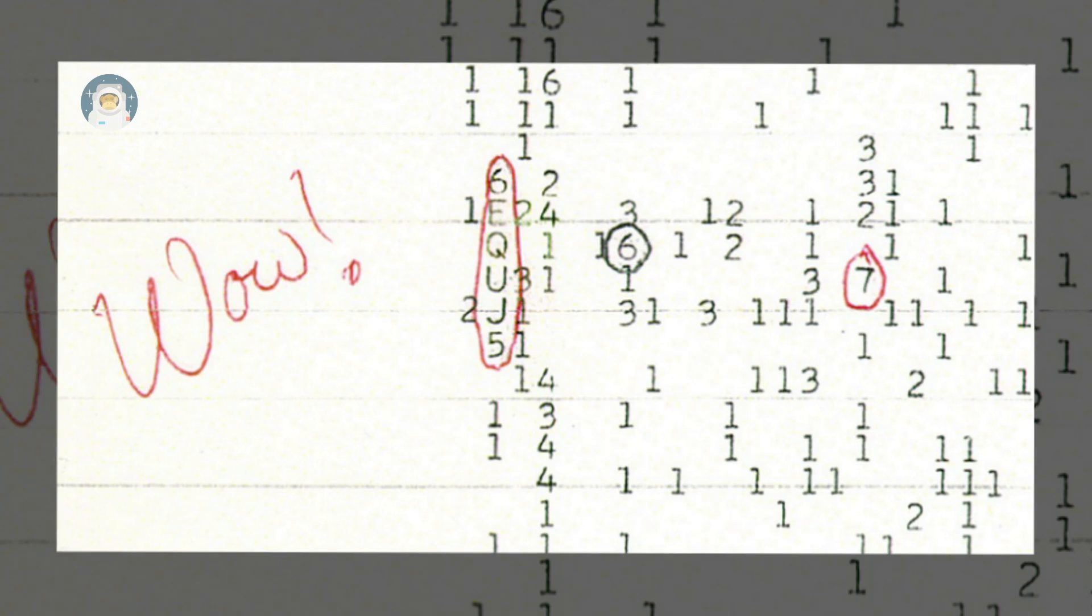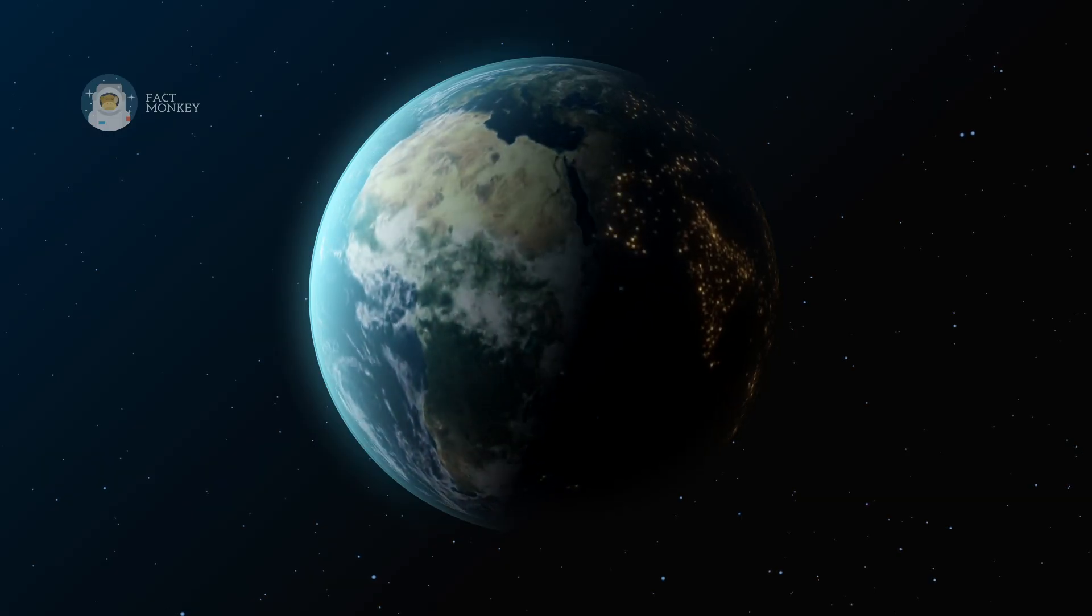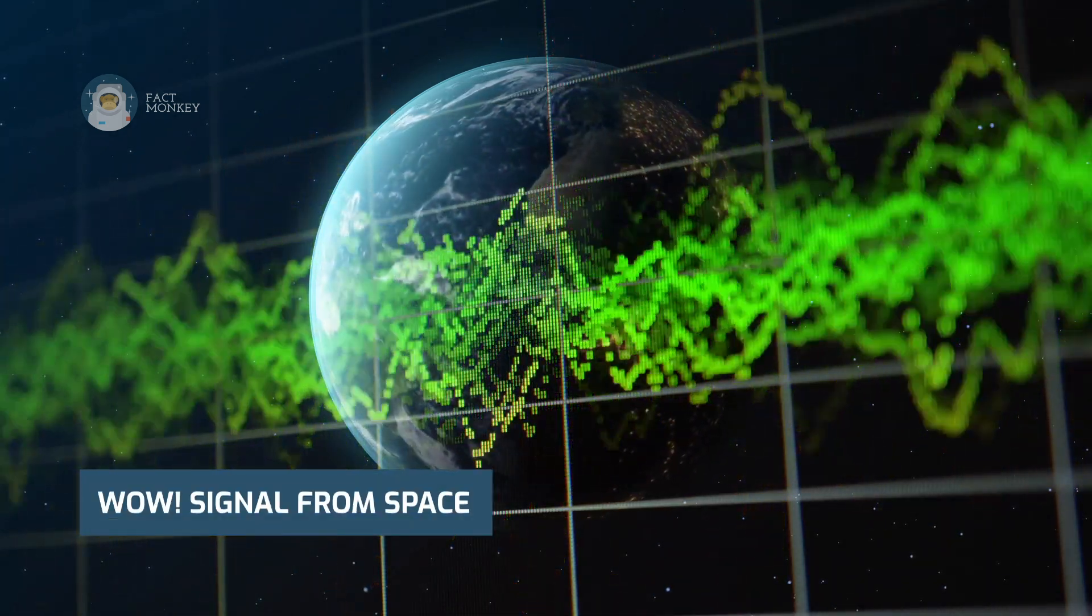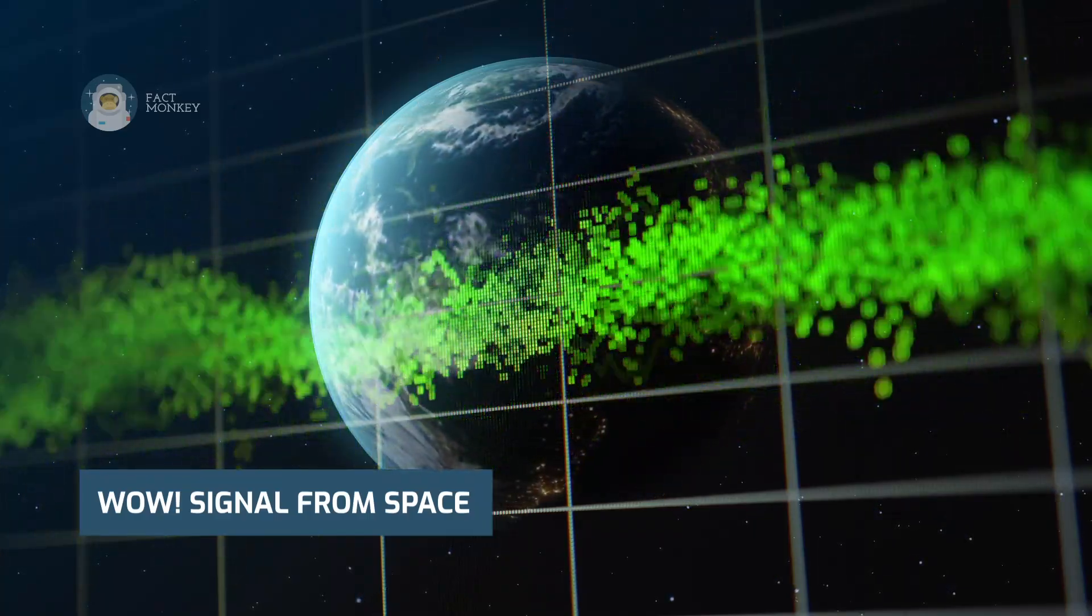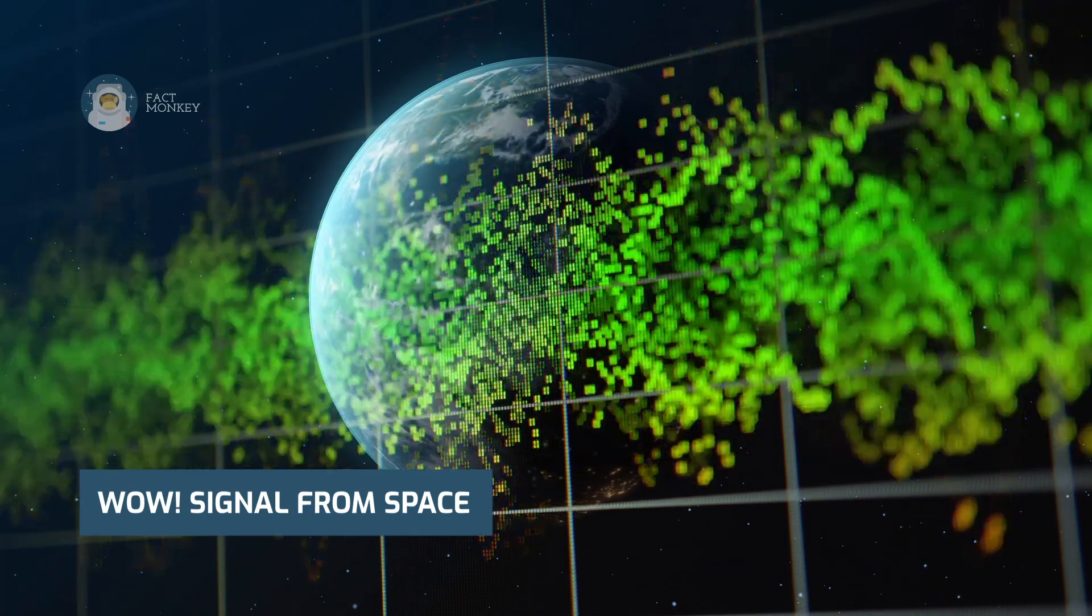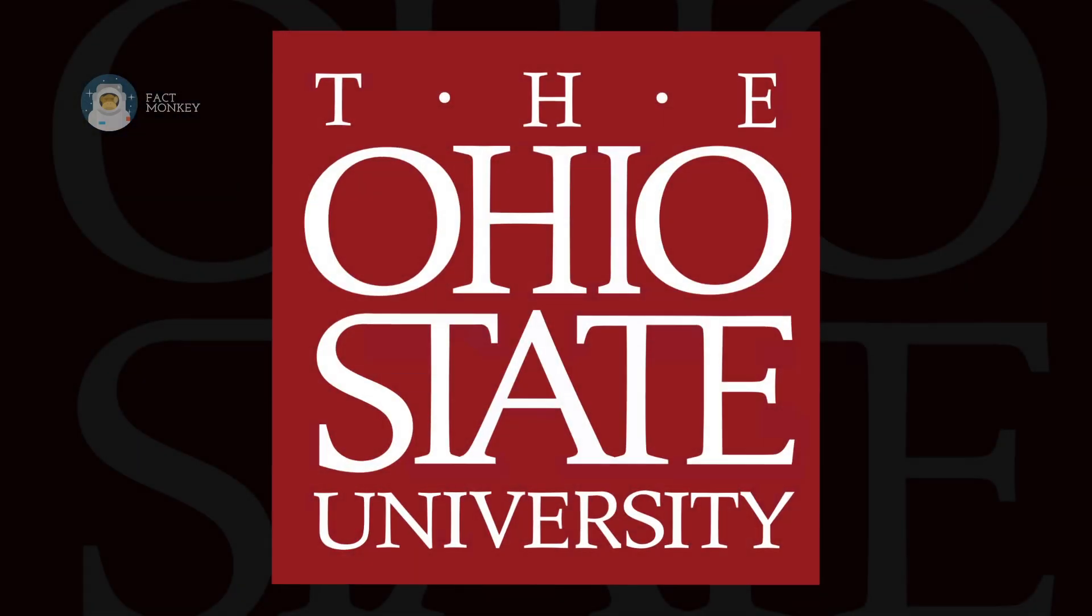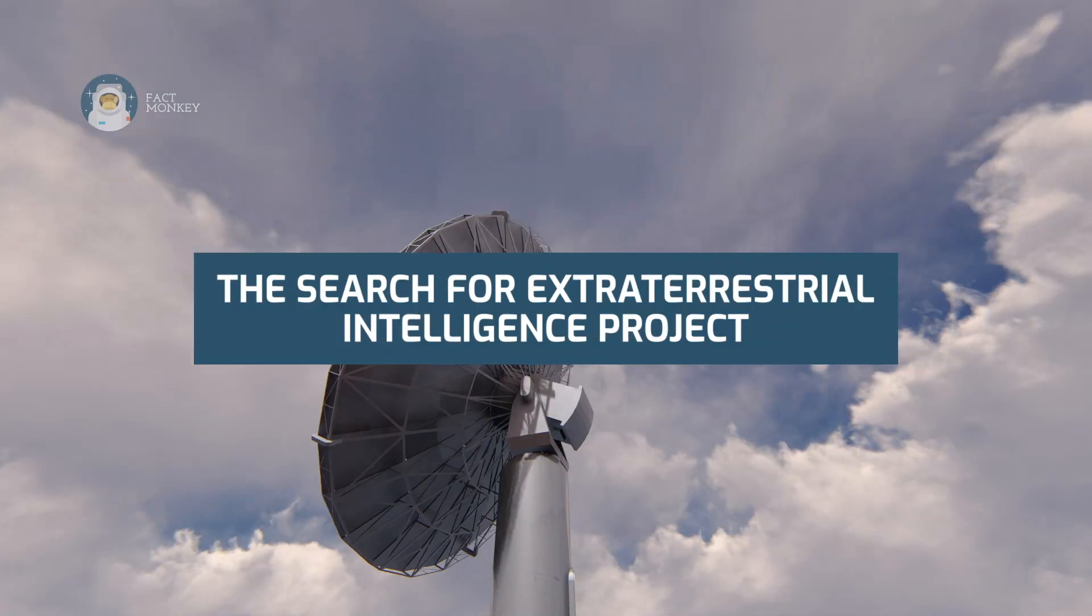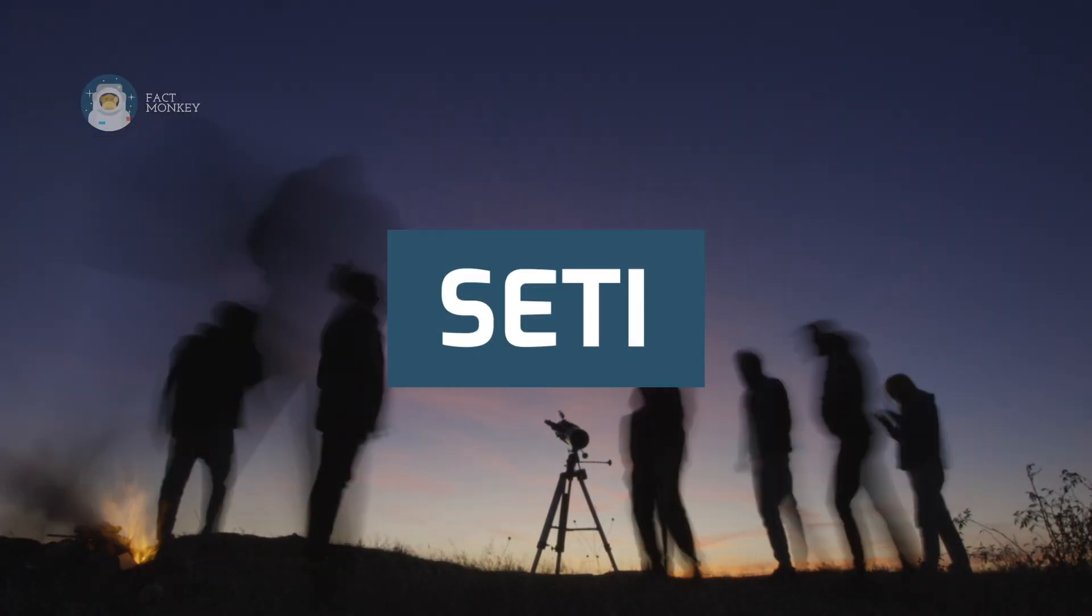The Wow Signal was a radio signal received from outer space, and it became a fuel for people to keep looking for more evidence. The Ohio State University created a project called the Search for Extraterrestrial Intelligence Project, or SETI for short, in hopes of finding any evidence.